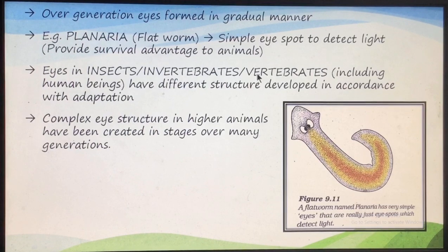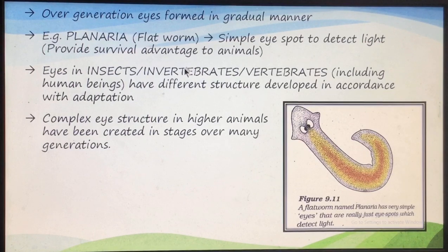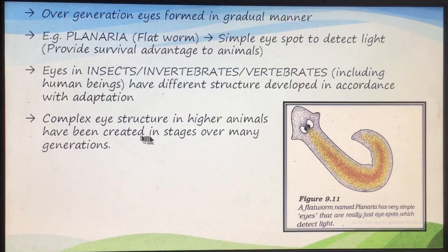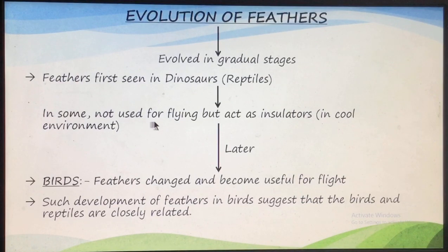Complex eyes are seen in insects, in other invertebrates, as well as in vertebrates like human beings. These complex eyes seen in vertebrates or certain invertebrates developed from the simple eye structure in stages. Some changes occurred in the DNA, and many more changes kept on accumulating over time. This is how the complex eye structure seen in higher organisms was created in stages, which may have taken trillions of years.